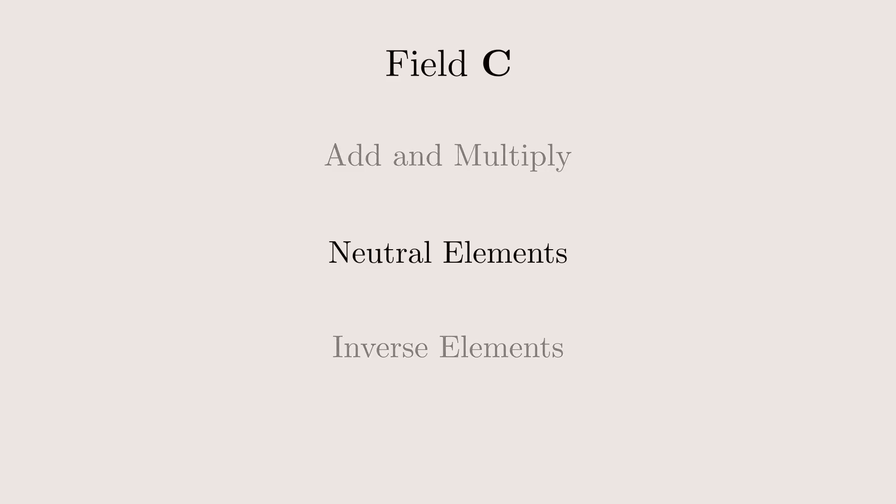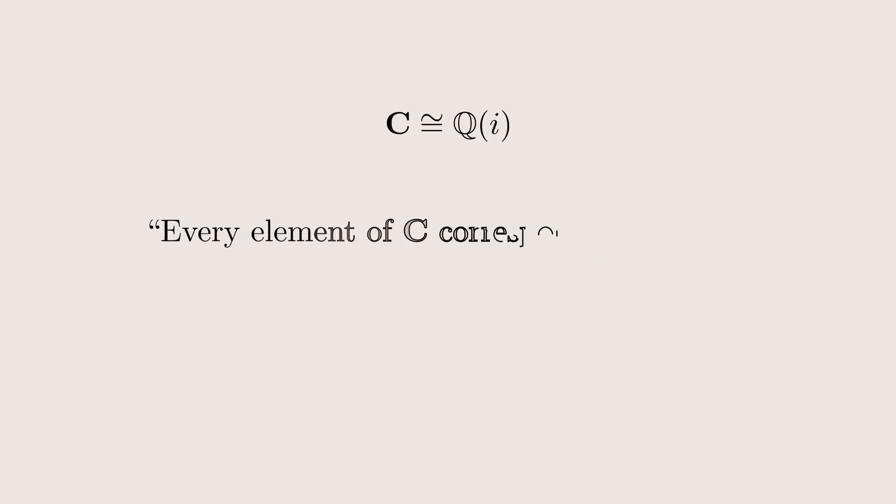The neutral element of addition is often called 0, while the neutral element of multiplication is then called 1. So we'll call the point O 0 and E 1 from now on. For now, this field is isomorphic to the rational complex numbers.